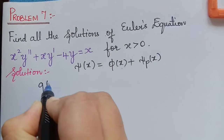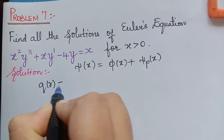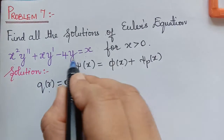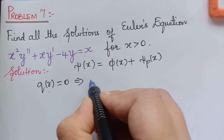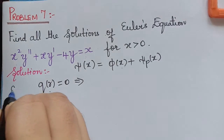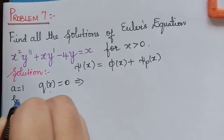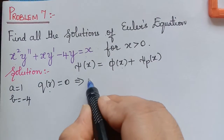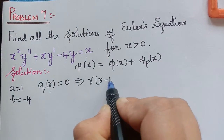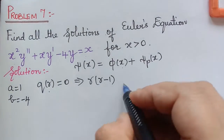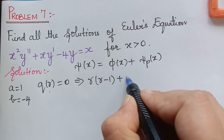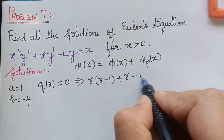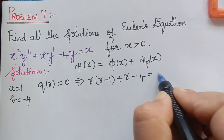First we shall find φ(x), for which we write the indicial polynomial q(r) = 0. Comparing with the Euler's equation, we get a = 1 and b = -4. Using these values in the indicial polynomial, we get r(r - 1) + ar + b = r(r - 1) + r - 4 = 0.